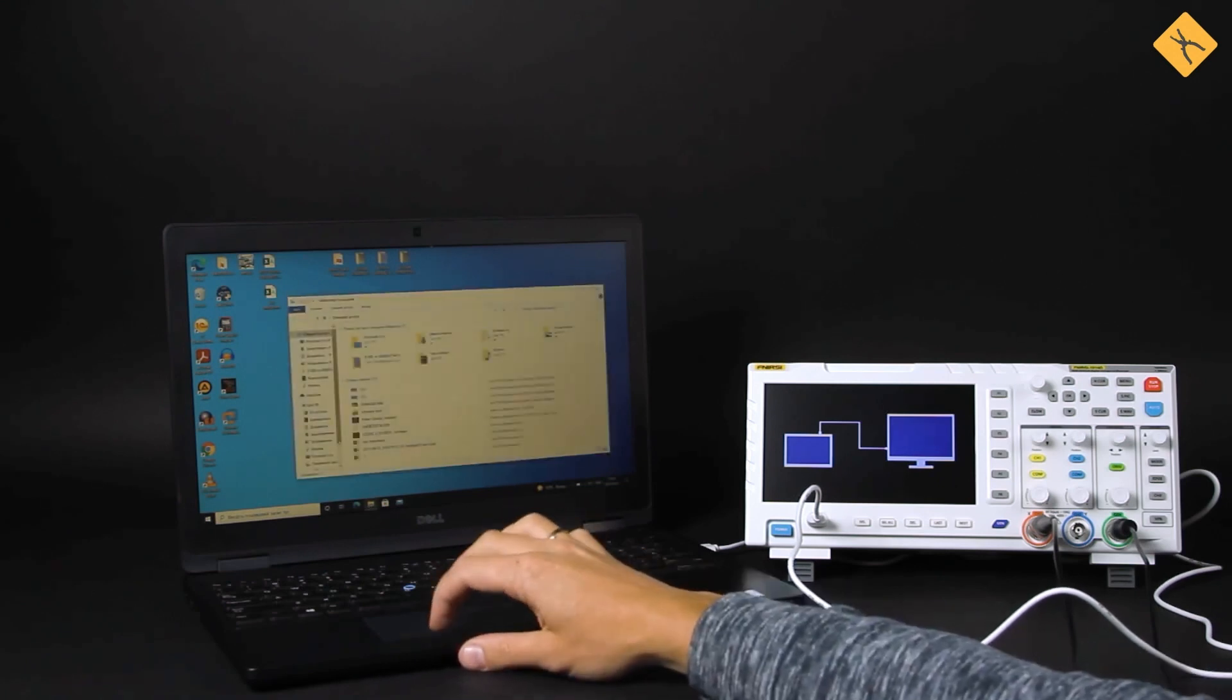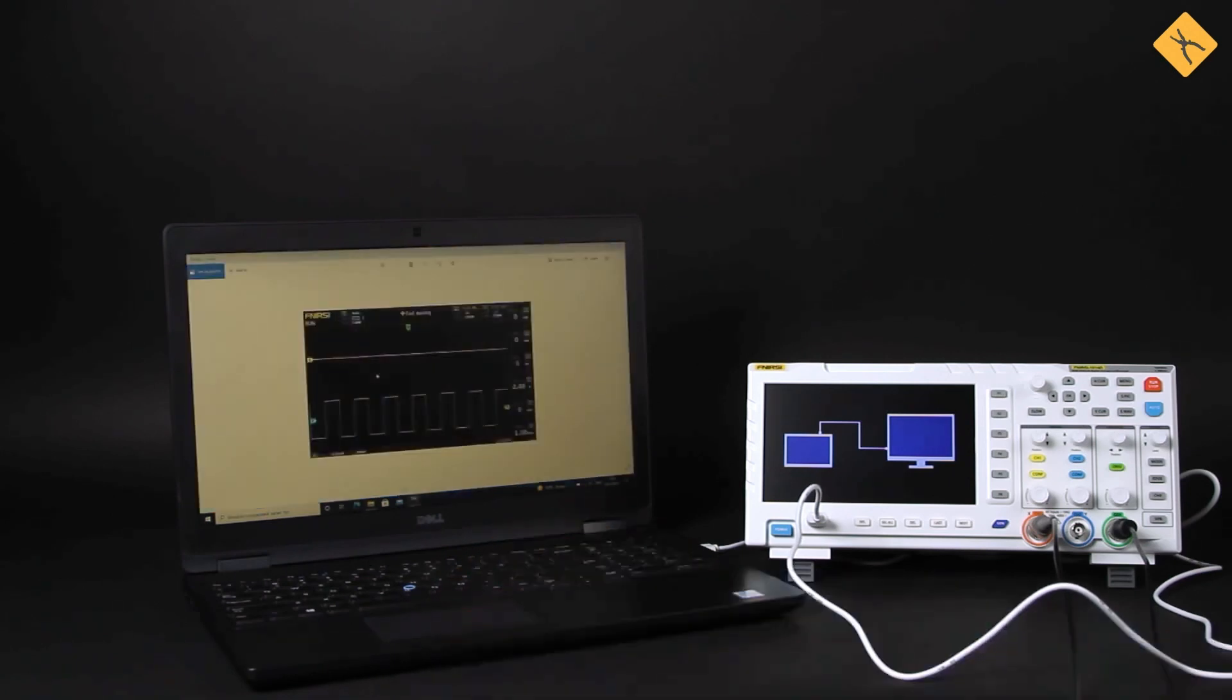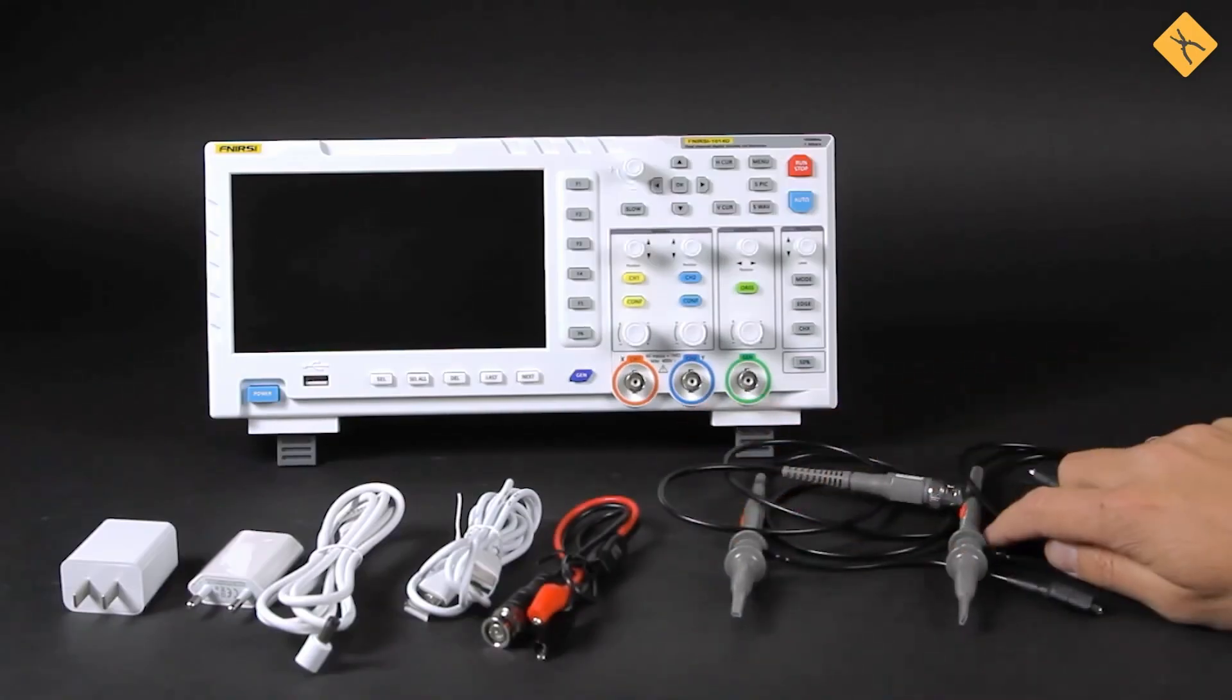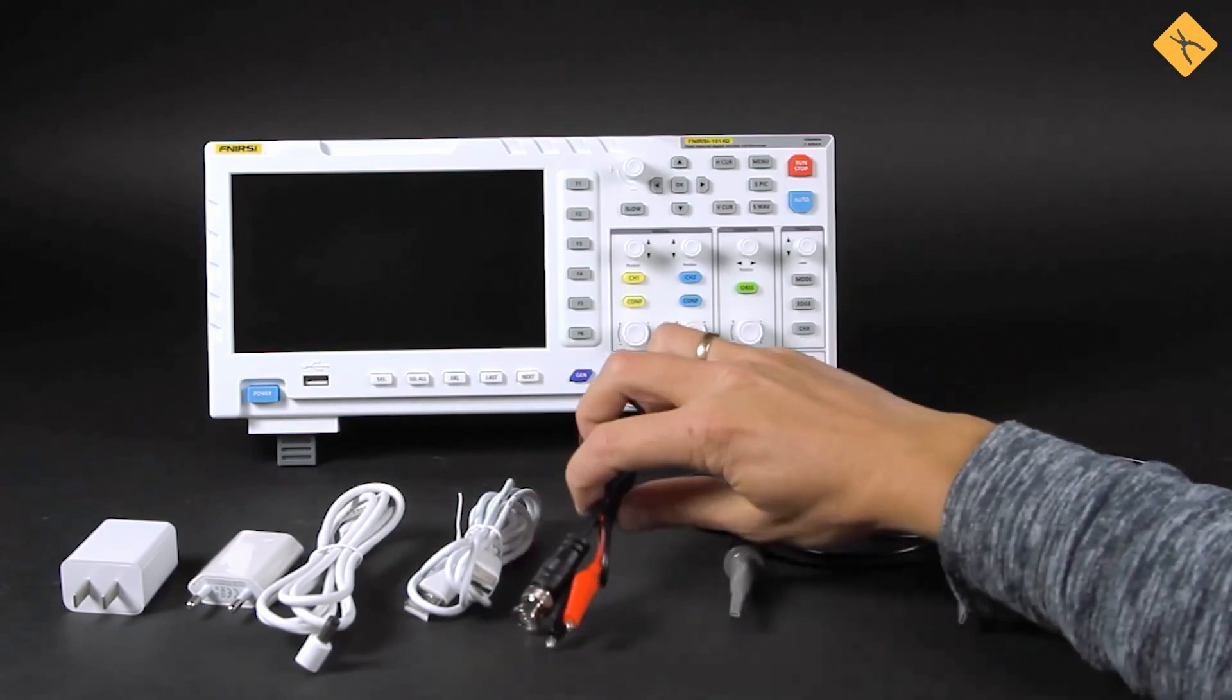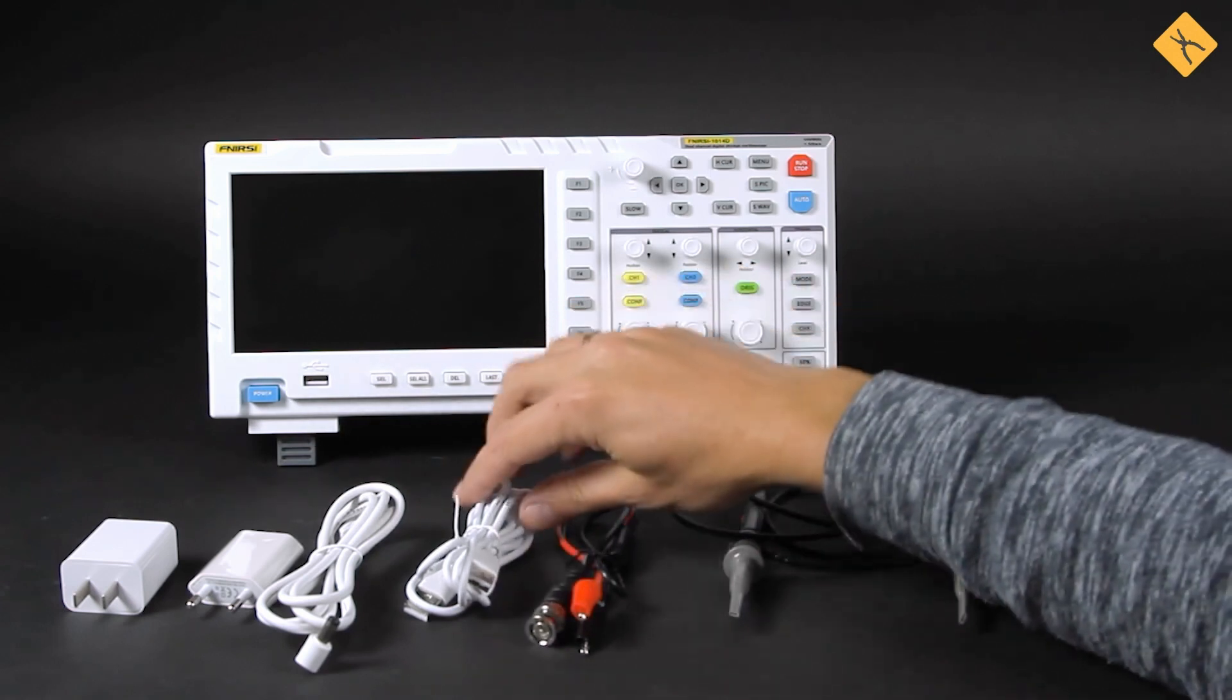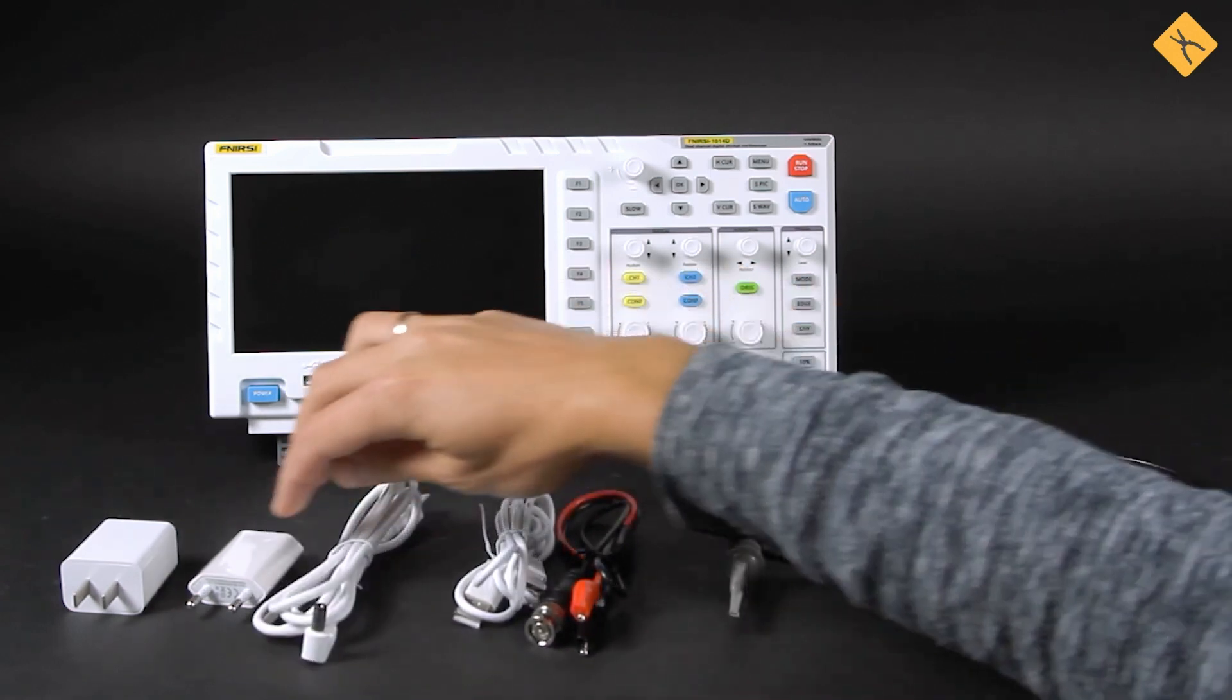You may then copy saved files to your computer for secondary analysis and study. The device comes complete with two measuring probes, one for each of the two channels, an alligator clip probe for the signal generator, a USB cable, a power cable and two power plugs for different power outlets.